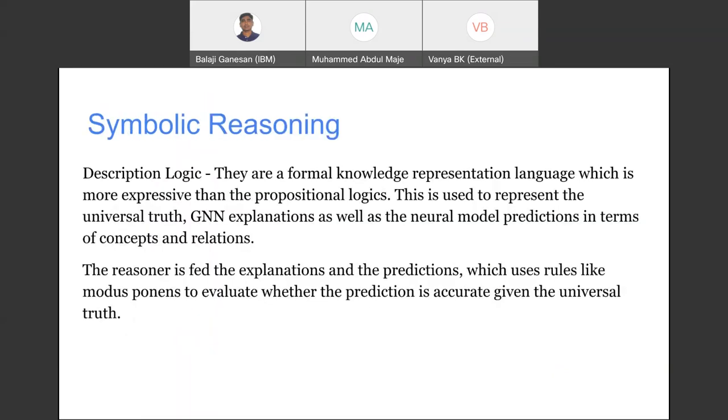So we took the approach of symbolic reasoning. We used a description logic, which is a formal knowledge representation language, more expressive than the propositional logic. We use this language to represent the universal truth, the GNN explanations, as well as the neural model predictions in terms of concepts and relation. The reasoner of this description logic is given the explanation and prediction as the input, and it uses rules like modus ponens to evaluate whether the prediction is correct, given a set of universal axioms.